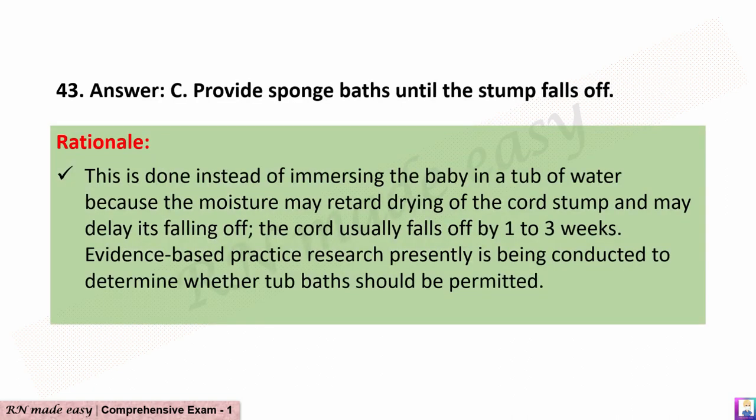The correct answer is C: Provide sponge baths until the stump falls off. Rationale: This is done instead of immersing the baby in a tub of water because the moisture may retard drying of the cord stump and may delay its falling off; the cord usually falls off by 1–3 weeks. Evidence-based practice research is presently being conducted to determine whether tub baths should be permitted.